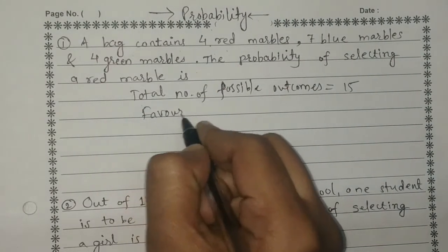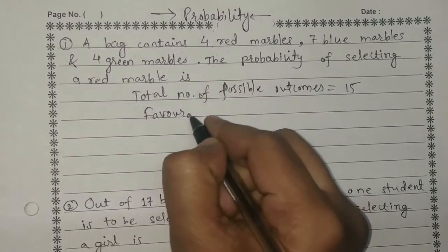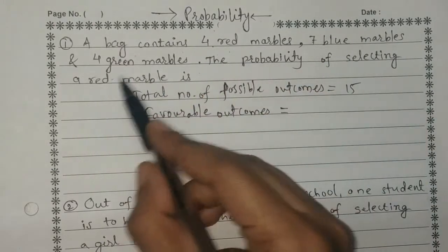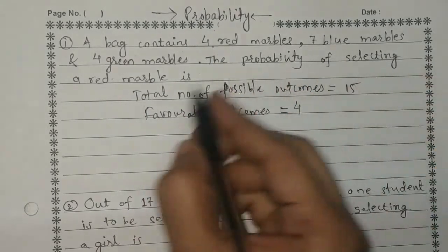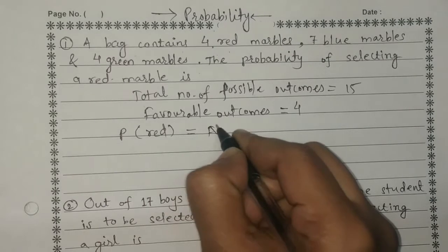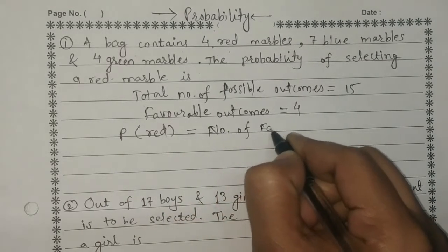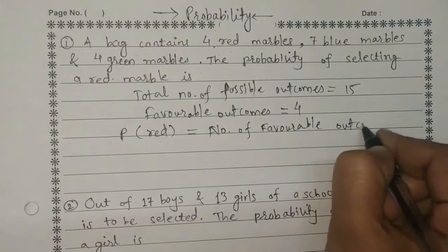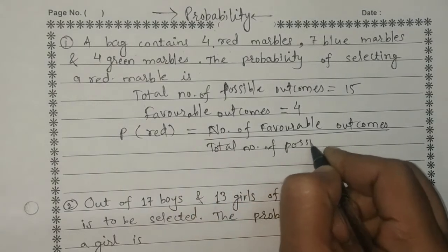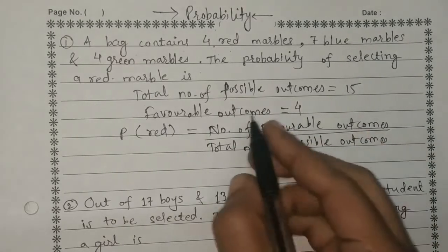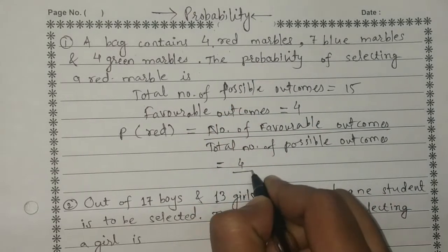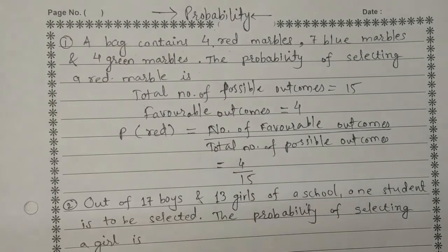The favourable outcomes of getting a red marble are 4. So the probability of selecting a red marble equals the number of favourable outcomes over total possible outcomes, which is 4 by 15.